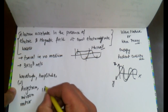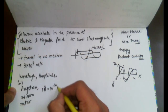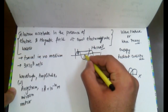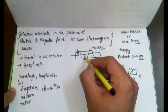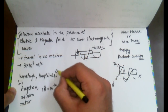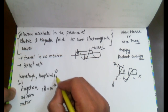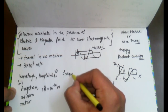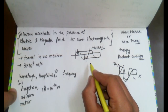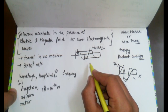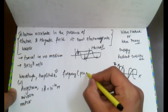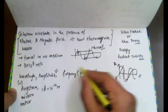Amplitude is the height of the crest or the depth of the trough, expressed in meters. We call this amplitude. Frequency is the number of waves passing through a particular point in one second. We call this value frequency, and the units of frequency are hertz.